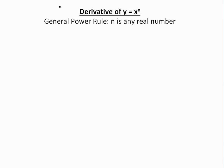Hi, it's Albert on Math Easy Solution. Today we discuss the general power rule and look at the derivative of y equals x to the power of n, where n is any real number. In my previous video I showed the power rule where n is a positive integer using the definition of the derivative, but now here's a general one which applies for everything. We're going to use logarithmic differentiation to get this.